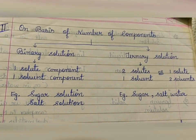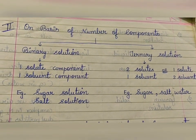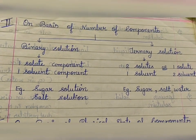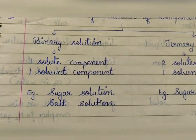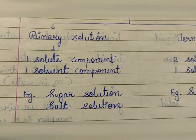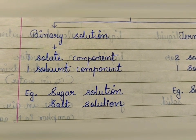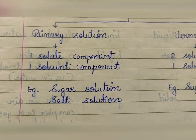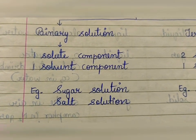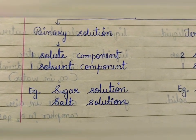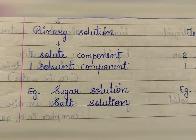The second classification is on the basis of number of components. There are basically two components: solute and solvent. If one solute and one solvent component are present, the solution is called a binary solution. Examples: sugar solution (sugar in water), salt solution (salt in water). A binary solution has two components — one solute and one solvent.